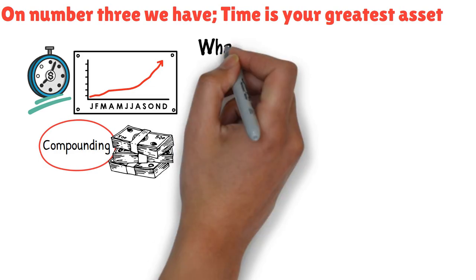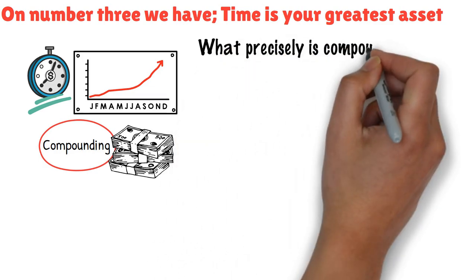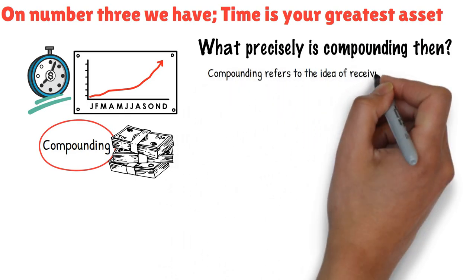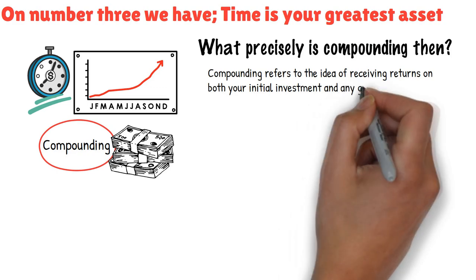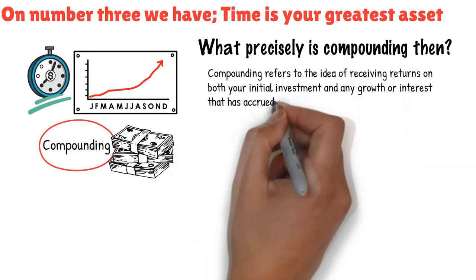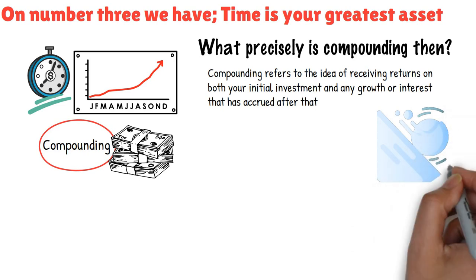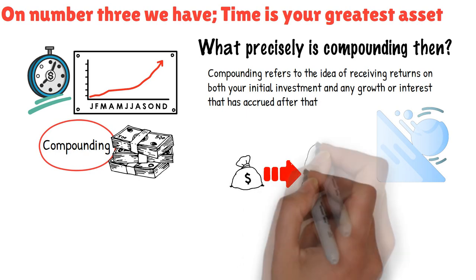What precisely is compounding then? Well, compounding refers to the idea of receiving returns on both your initial investment and any growth or interest that has accrued after that. It can be explained simply by comparing it to a snowball that is rolling down a hill while accumulating more snow.